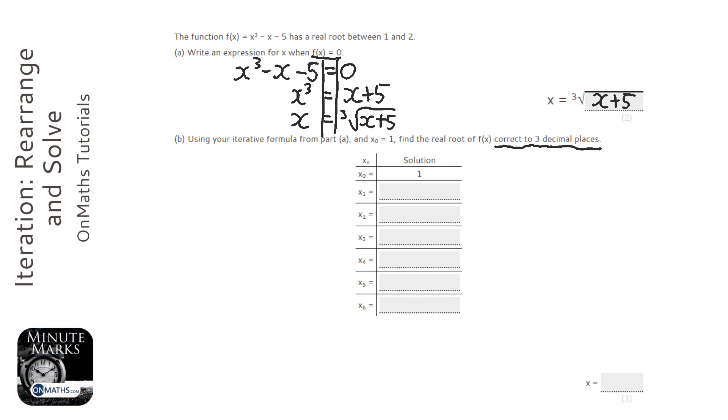So it will always give you a first one - the x₀, the first one to try. And all you're going to be doing is putting that one into this formula here. So let's try it. Cube root of 1 plus 5, and that gets me 1.81712...